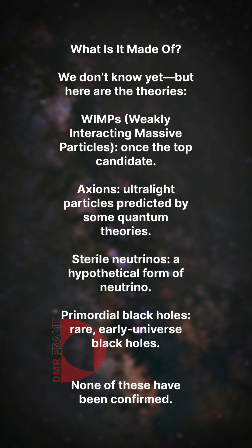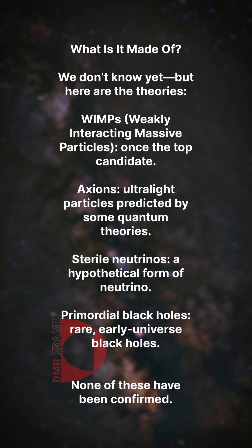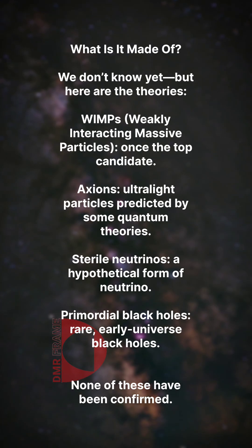What is it made of? We don't know yet, but here are the leading theories: WIMPs (weakly interacting massive particles), once the top candidate; axions, ultralight particles predicted by some quantum theories; sterile neutrinos, a hypothetical form of neutrino; and primordial black holes, rare early-universe black holes. None of these have been confirmed.